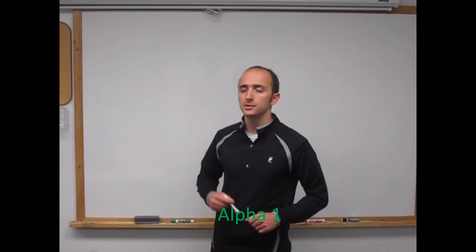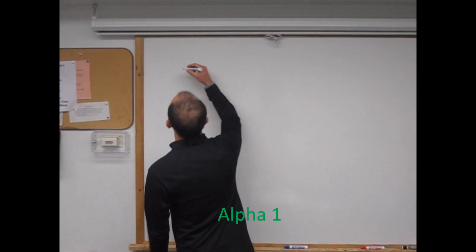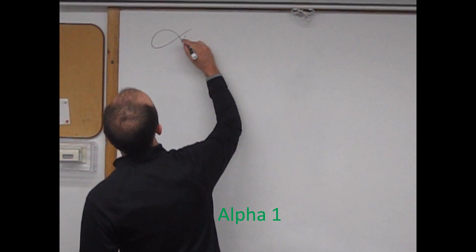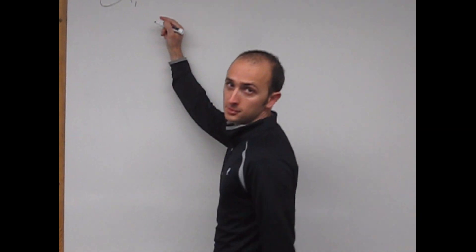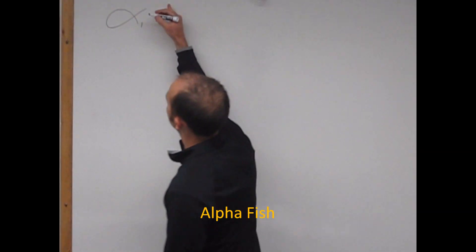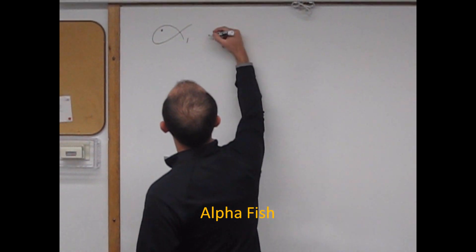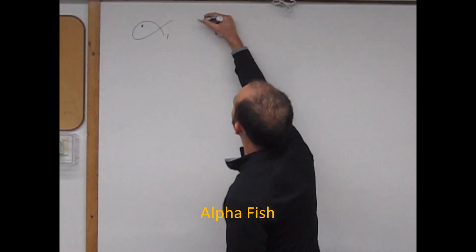Alright, our next autonomic receptor is alpha-1. So alpha-1 is part of the sympathetic nervous system. Looks like a little fish, so I can draw a little eye. The eye tells me IP3 DAG.